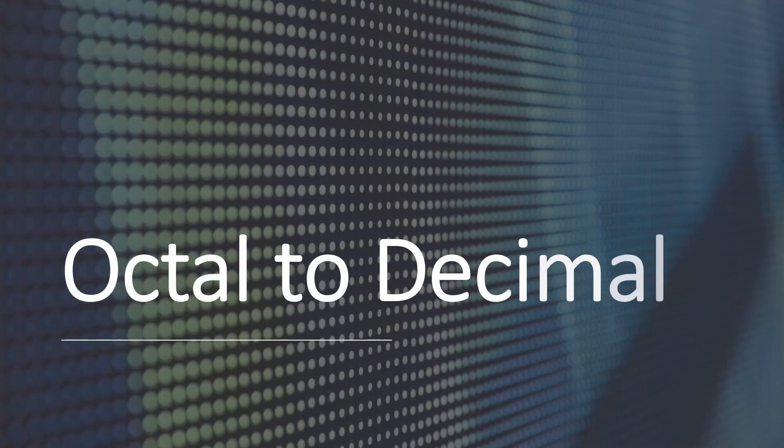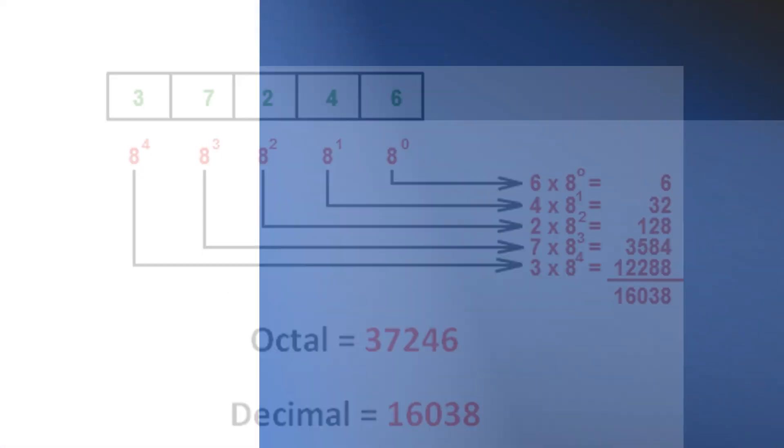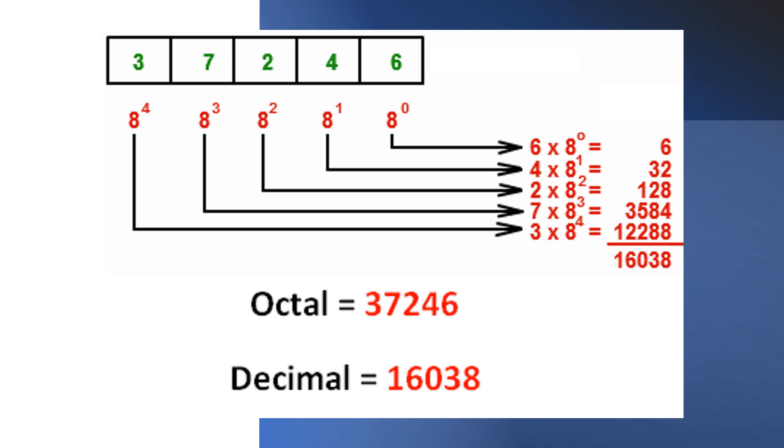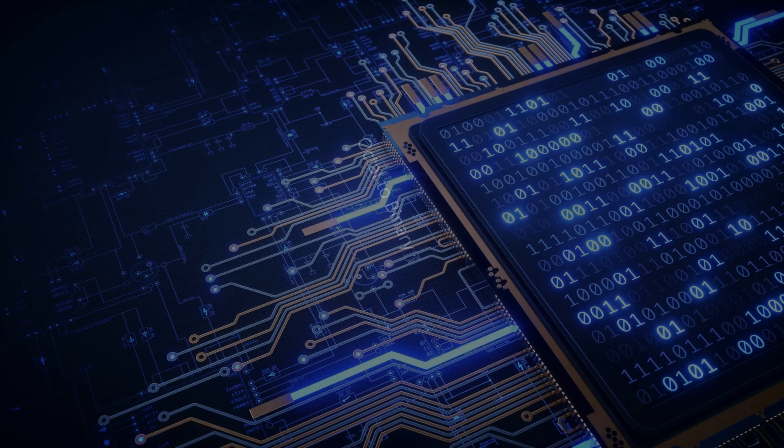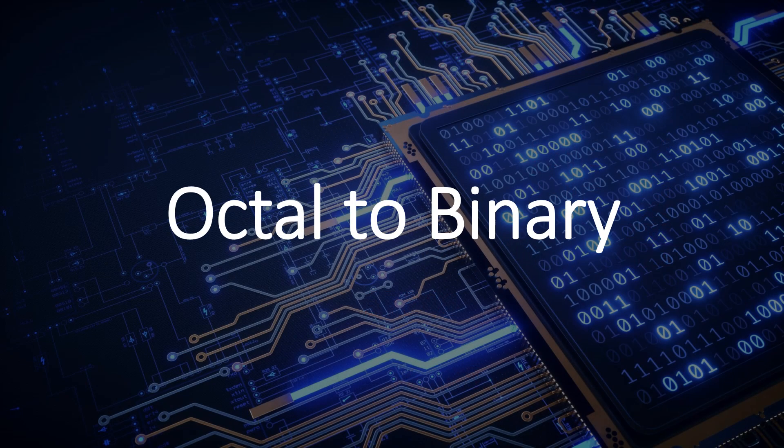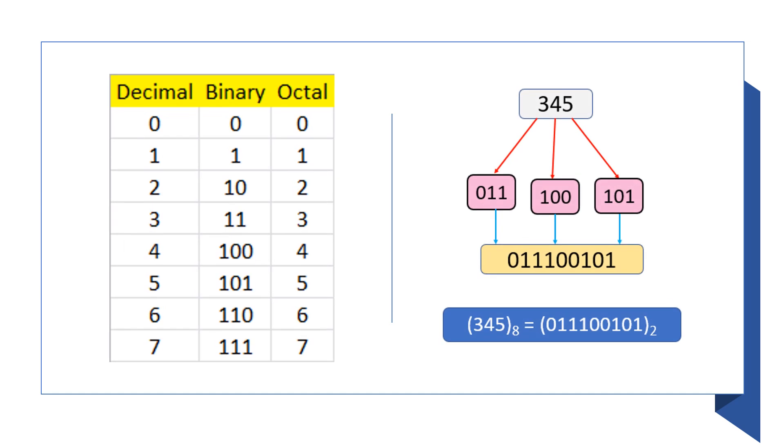Converting octal to binary numbers. First, write each digit in octal number in 3 bits. And secondly, write down all the bits together to get the binary number for the octal number.